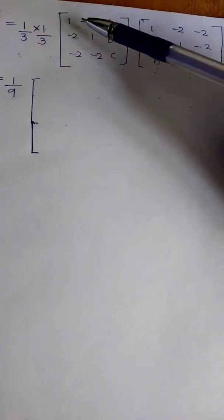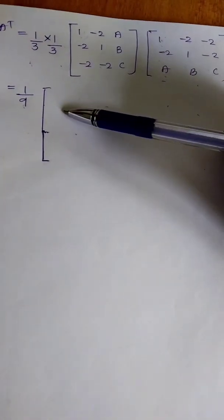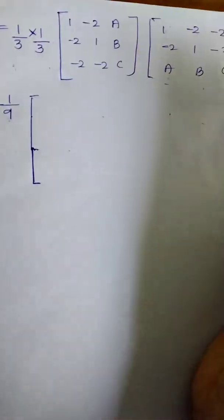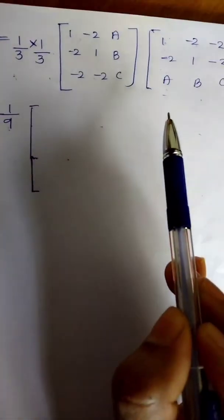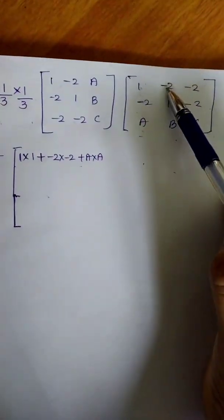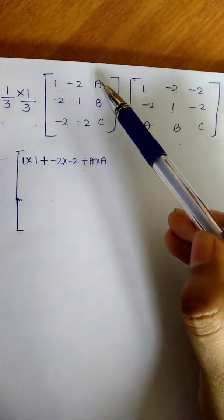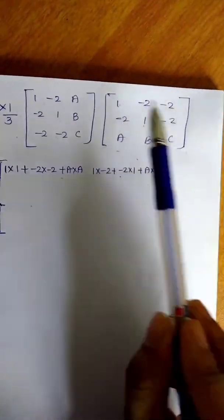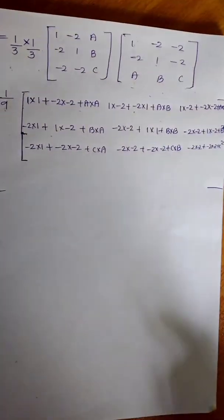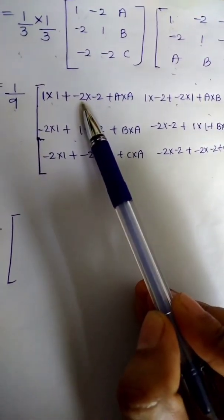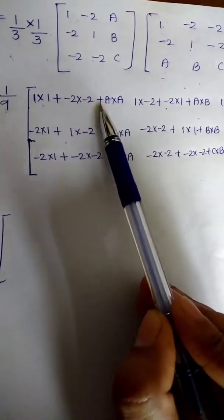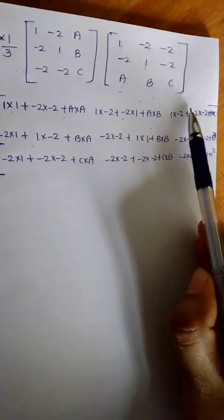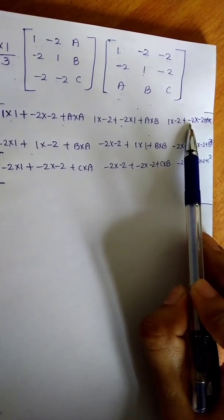This is the first multiplication. Let me show you clearly: 1 into 1 plus minus 2 into minus 2 plus A into A — that's the first element. 1 into minus 2 plus minus 2 into 1 plus A into B — that's the second element. 1 into minus 2 plus minus 2 into minus 2 plus A into C — that's the third element. So: 1 plus 4 plus A squared equals 5 plus A squared. Then minus 2 plus minus 2 equals minus 4, giving minus 4 plus AB. Then minus 2 plus 4 equals 2, giving 2 plus AC.